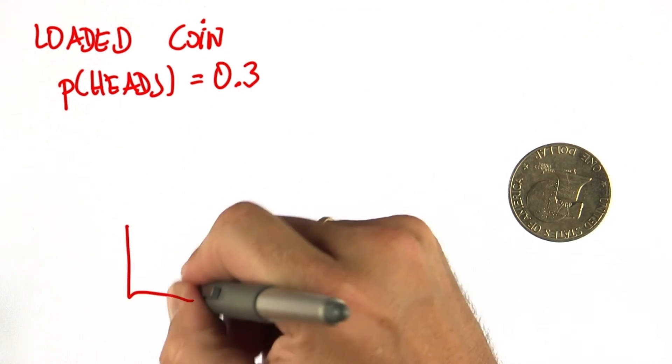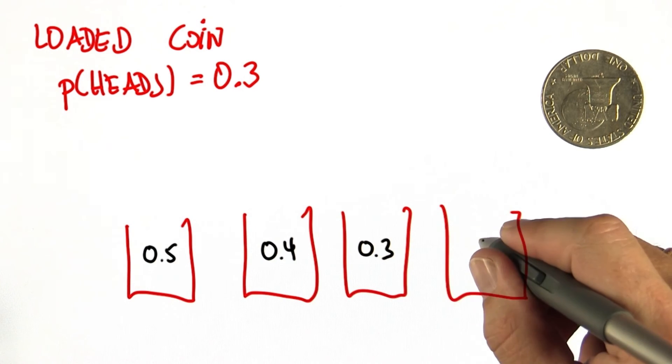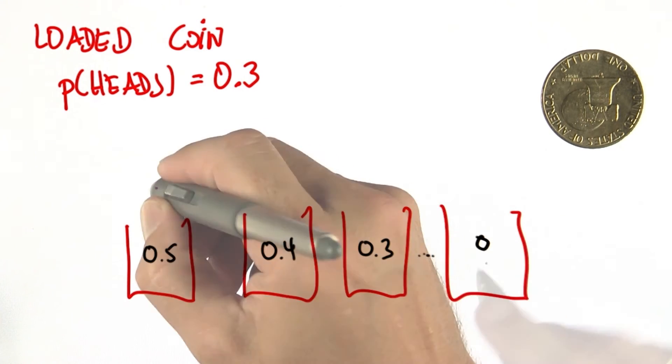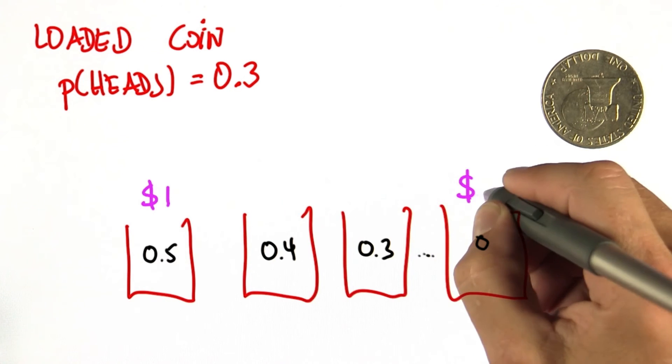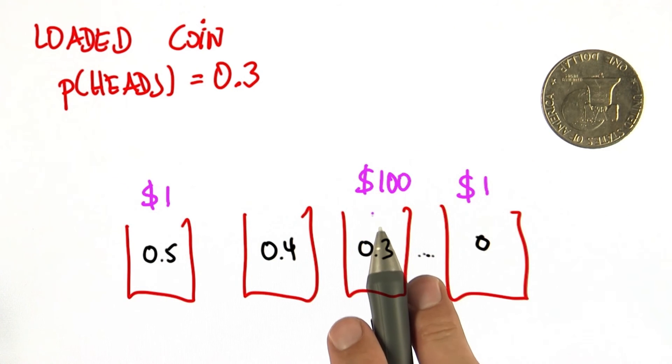In fact, there were many buckets of coins, the fair ones, the slightly loaded, all the way to the fully loaded. And those guys were cheap. But this one over here was really expensive. So I wanted to make sure that I really got a loaded coin.